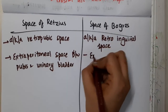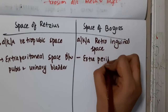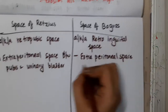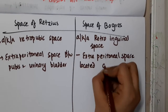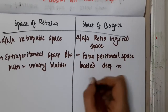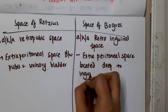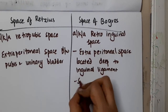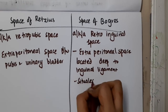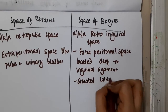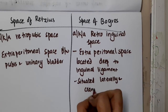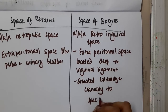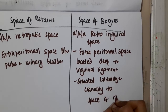The space of Bogros is also an extra-peritoneal space, located deep to the inguinal ligament. It is situated laterally and cranially to the space of Redzius.